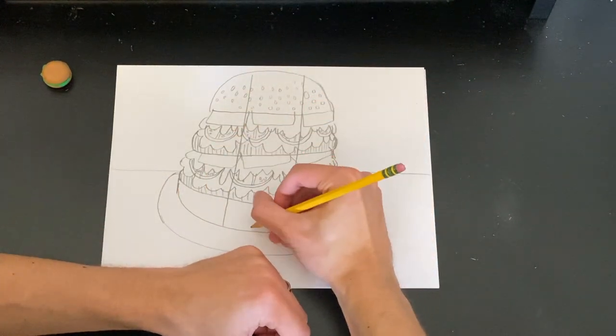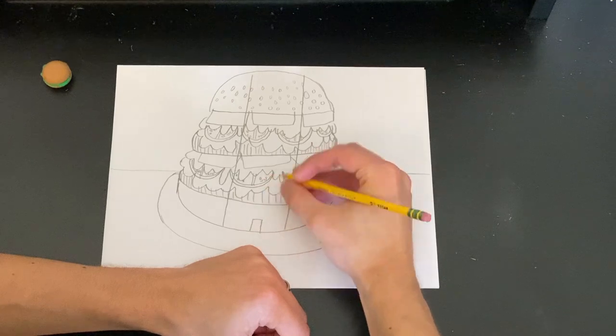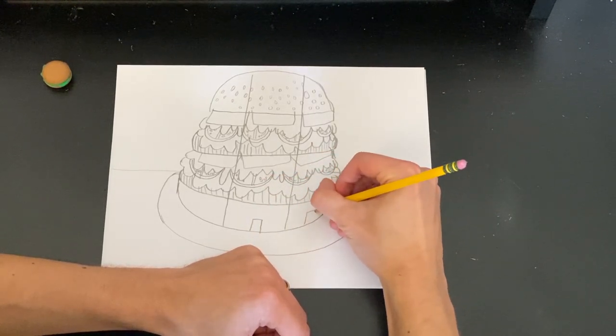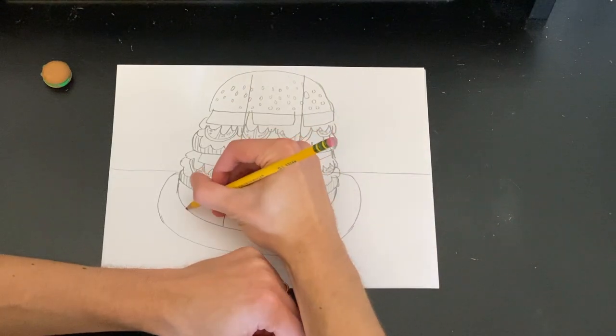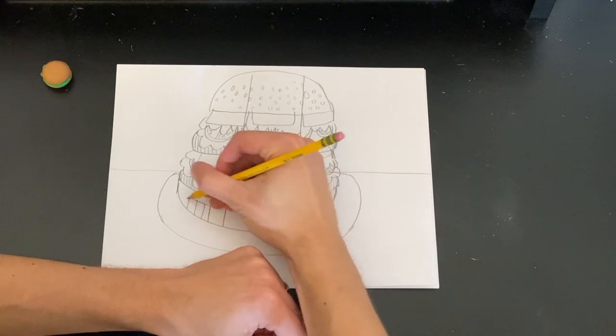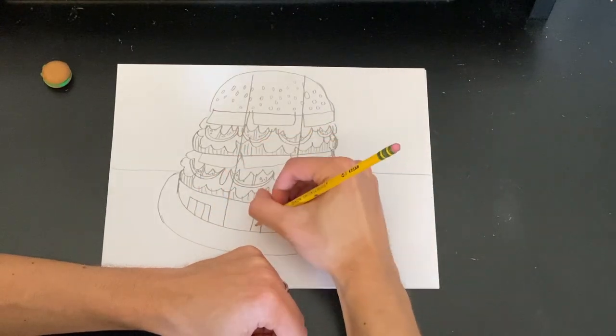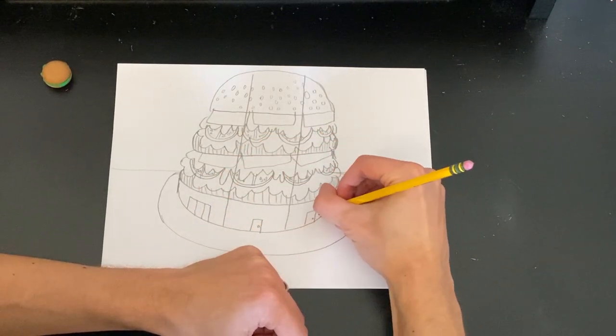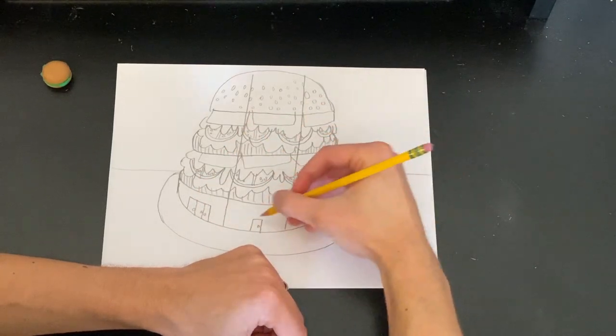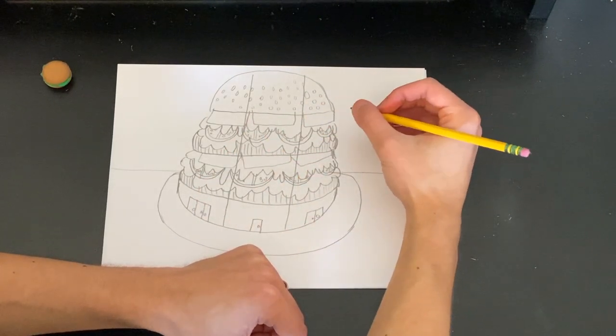So buildings have doors. So let's make a rectangle here for a door. Maybe this building here has two doors. So we make a long rectangle and a line down. And maybe this side, this rectangle, has three doors. So we'll do two lines going up and three doors here. We could have door knobs. It's up to you where they're placed.